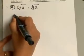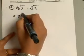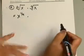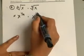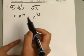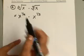So again, like we did earlier, start out by rewriting this as an exponential format with rational exponents. So you end up with x to the 1/4 times x to the 1/3.